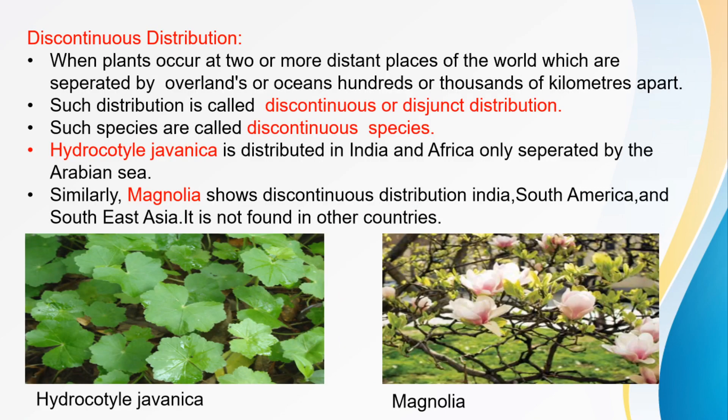The third type is discontinuous distribution. When plants occur at two or more distinct places of the world which are separated by overlands or oceans hundreds or thousands of kilometers apart, such distribution is called discontinuous or disjunct distribution.